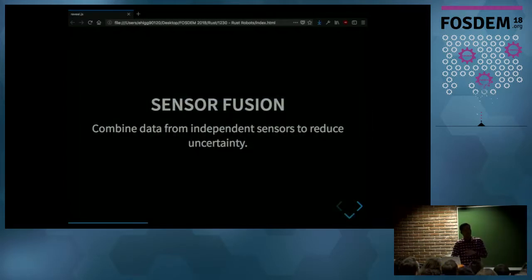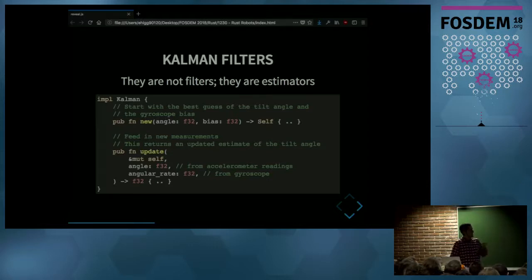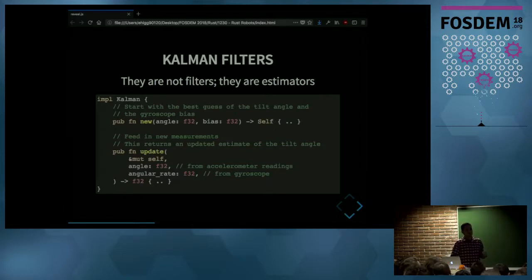The accelerometer and gyroscope each have problems on their own, but you can combine both measurements using sensor fusion to get a better estimate of the angle. There are many ways to do sensor fusion, but a Kalman filter is appropriate here. I'm not going into the math behind Kalman filters, but they are system state estimators. For this Kalman filter, I chose a state of the tilt angle and the gyroscope bias. The filter starts with some initial state and is updated with each new measurement, predicting the next state and comparing against gyroscope and accelerometer readings.